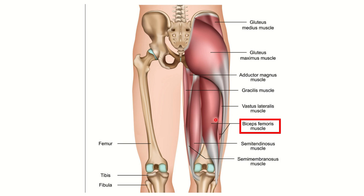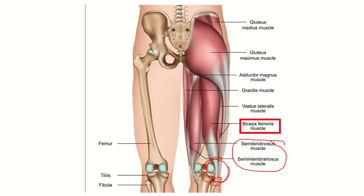Here we can see the knee joint — this is the medial side and the lateral side. On the medial side there are two important muscles: semimembranosus and semitendinosus. Biceps femoris is located laterally, and we can see on the lateral side of the knee joint it inserts into the fibula. So the lateral side of the knee joint is where the pain is located.